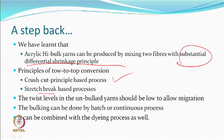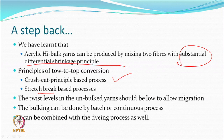The twist levels in the unbulked yarn should be low to allow migration of fibres, because the shrinkable component is supposed to migrate to the core of the yarn. The non-shrinkable component would come out and be majorly responsible for bulk generation. Bulking can be done by a batch or continuous process using steaming or dry heat, and it is possible to combine bulking with dyeing — simultaneous dyeing and bulking can be done.